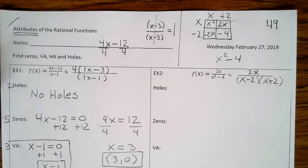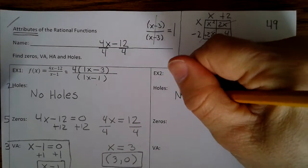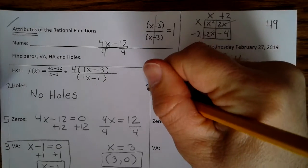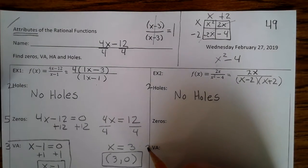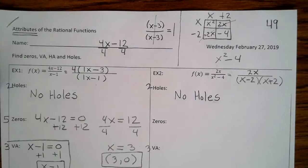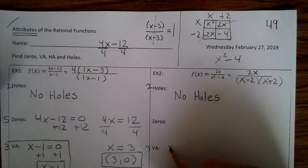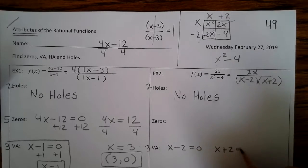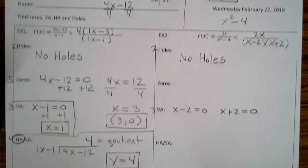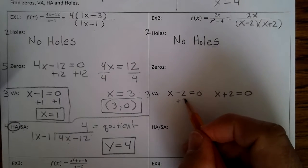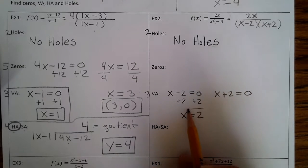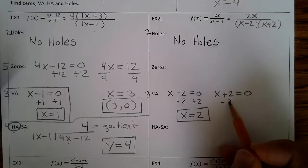There's nothing that divides and becomes 1, so there are no holes — that's step 2. Step 3 is to find the vertical asymptotes by setting the denominator equal to 0: x minus 2 equals 0 and x plus 2 equals 0. Adding 2 to both sides gives x equals 2, and subtracting 2 from both sides gives x equals negative 2. Those are our vertical asymptotes.